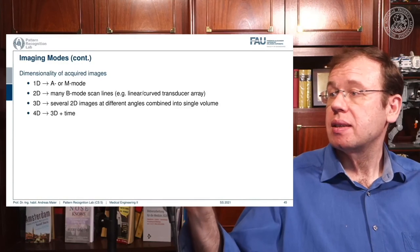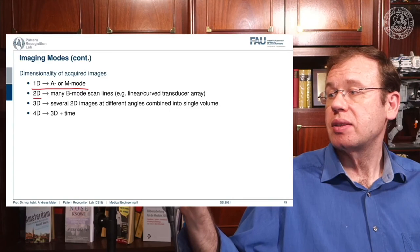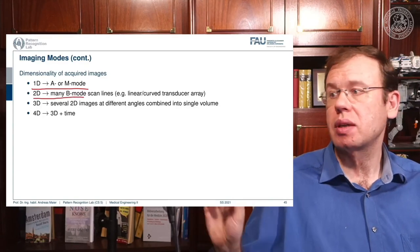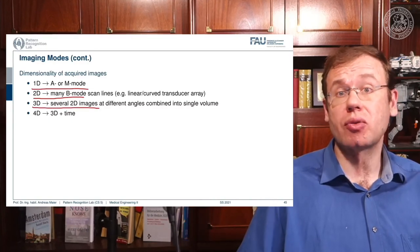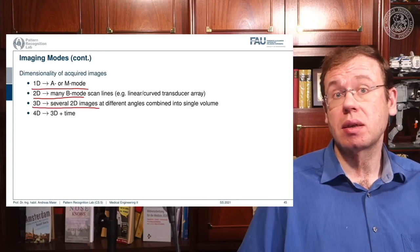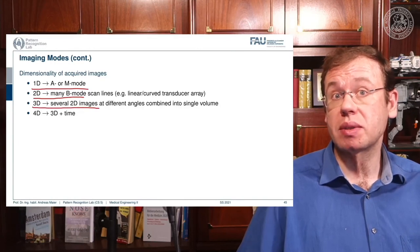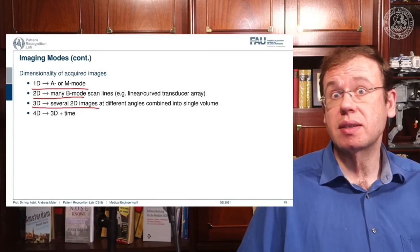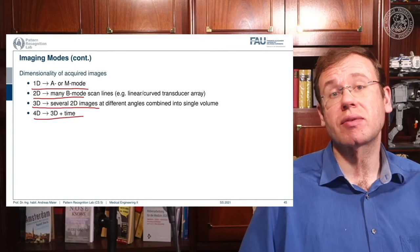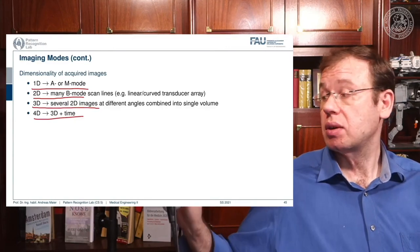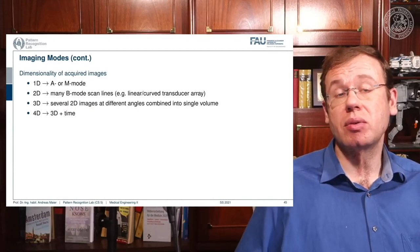To summarize the imaging modes: 1D acquisition is A or M mode; 2D acquisition gives rise to B mode; scanning many B mode images gives 3D ultrasound. With specially constructed transducers, 3D volumes can be acquired directly — as seen with the fetus in the womb. Fast repetition of 3D acquisition gives rise to 4D imaging. All of these are used in clinical practice.